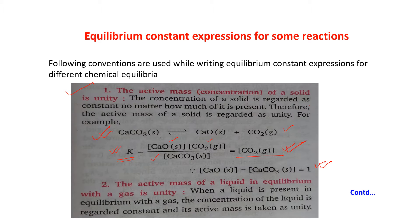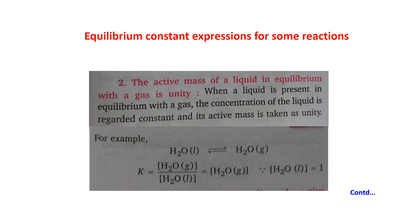Rule number 2: the active mass of a liquid in equilibrium with a gas is also unity. When a liquid is present in equilibrium with a gas, the concentration of that liquid is regarded as constant and its active mass is taken as unity. For example, H2O(l) ⇌ H2O(g). K equals concentration of the product divided by concentration of the reactant. The reactant is in the liquid state, so its active mass is unity. Therefore, K = [H2O(g)].